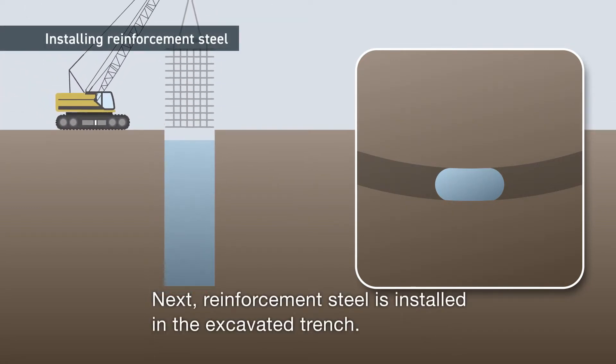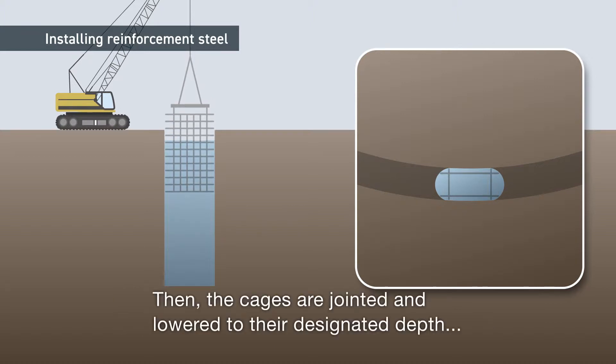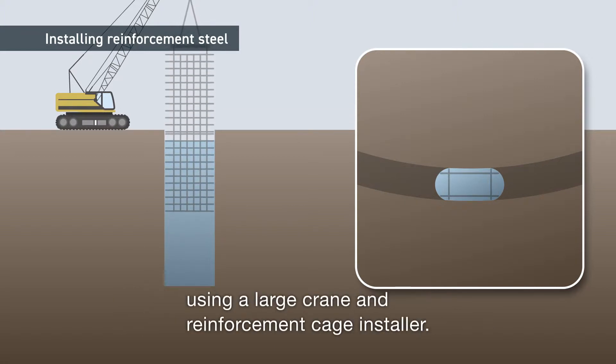Next, reinforcement steel is installed in the excavated trench. The steel is pre-assembled into reinforcement cages at a separate location. Then, the cages are joined and lowered to their designated depth, using a large crane and reinforcement cage installer.